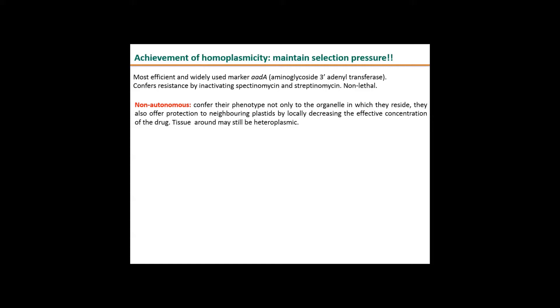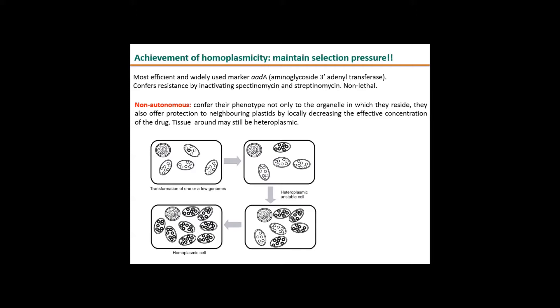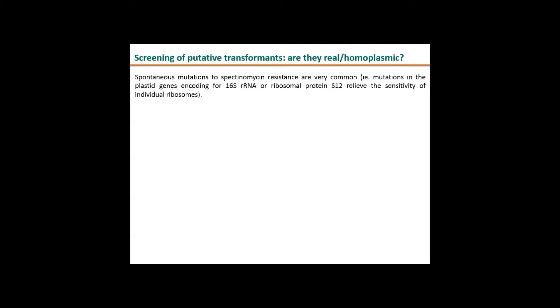This means it confers the phenotype, in this case the resistance, not only to the organelle in which it is transformed, but it also protects neighboring plastids by locally decreasing the effective concentration of the drug. That means if you're not very thorough in keeping selection pressure and transferring into fresh media every so often, your tissue around could still be heteroplasmic. In this drawing of a plant cell with a nucleus and different chloroplasts, one has a dark dot that's been transformed. There are many plastomes within each chloroplast. You have to keep selection through that chimeric stage where you have cells transformed and untransformed, and go all the way through until you have a homoplasmic cell where everything is transformed.